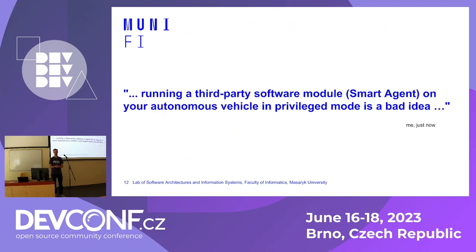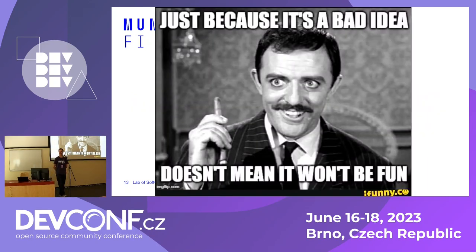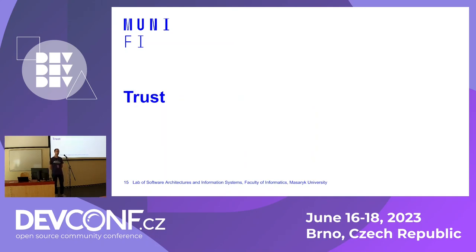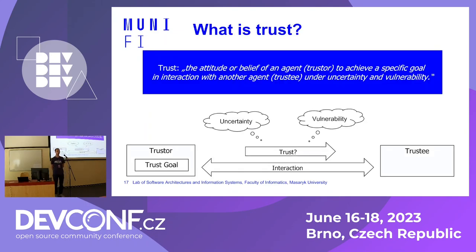Running a third-party software module on your autonomous vehicle in privileged mode is kind of a bad idea — I think everybody can agree we shouldn't do that. But if it's a bad idea, it can still be fun. Our view of how to make it safe is to use the concept of trust. By trust, I don't really mean trust as in software engineering with trusted computing, trusted execution, key pairs, encryption, or HTTPS certificates. I mean more like trust as in human psychology or philosophy, where you have a relationship between a truster and a trustee, and the trustee has some kind of vulnerability by trusting.